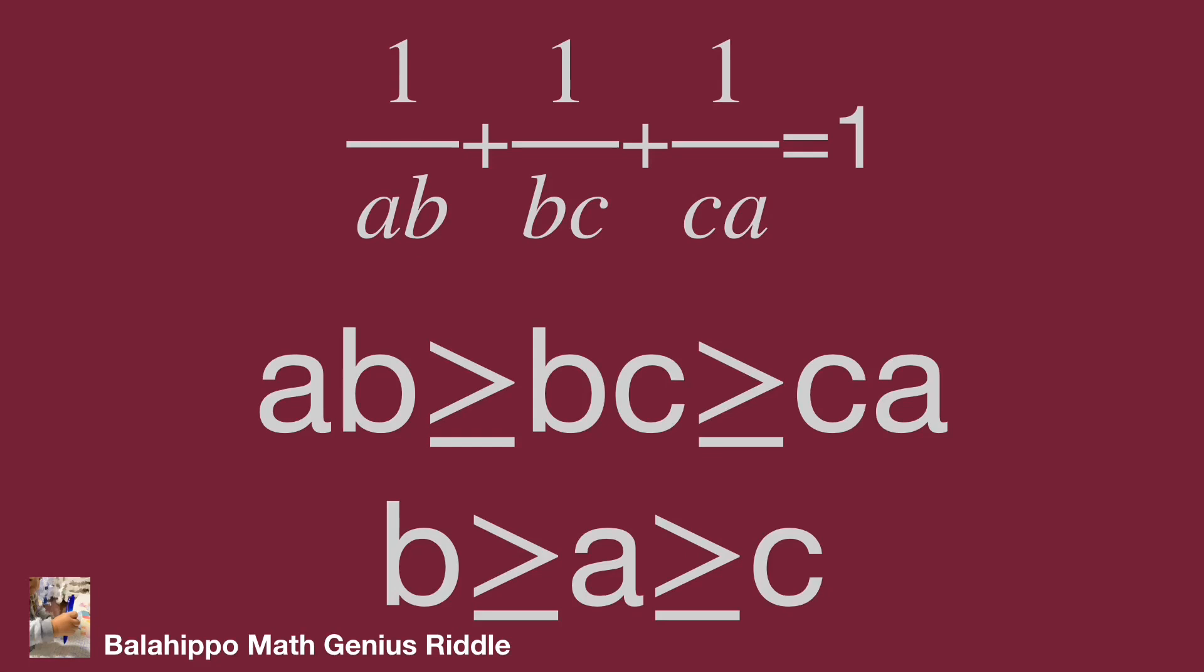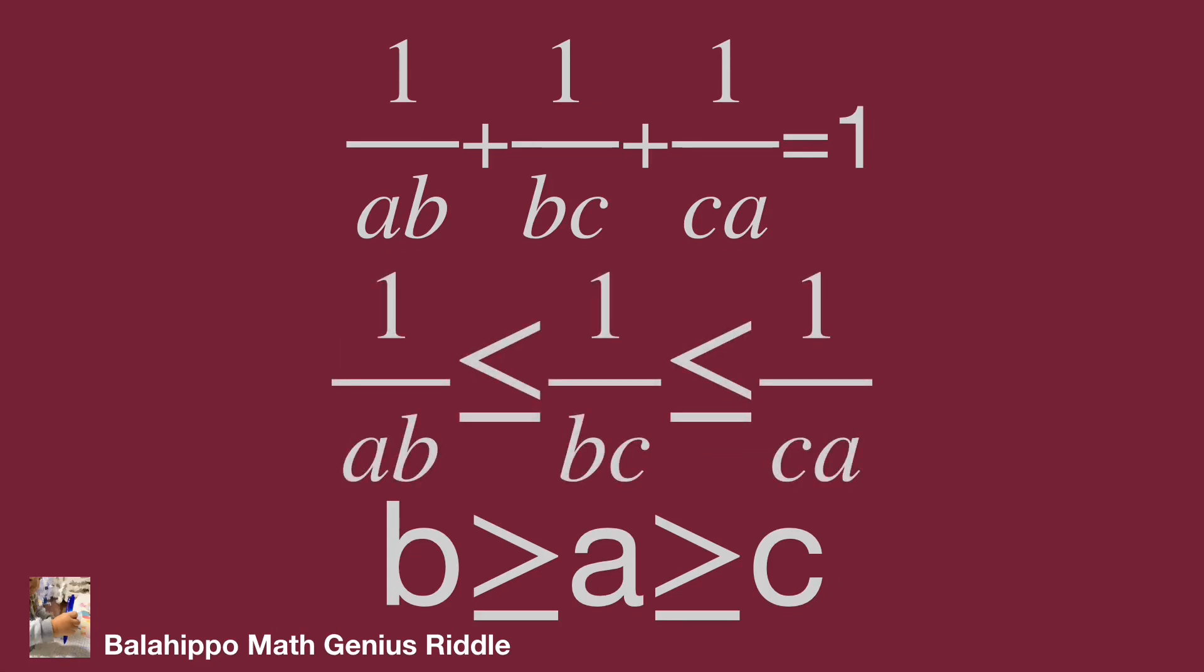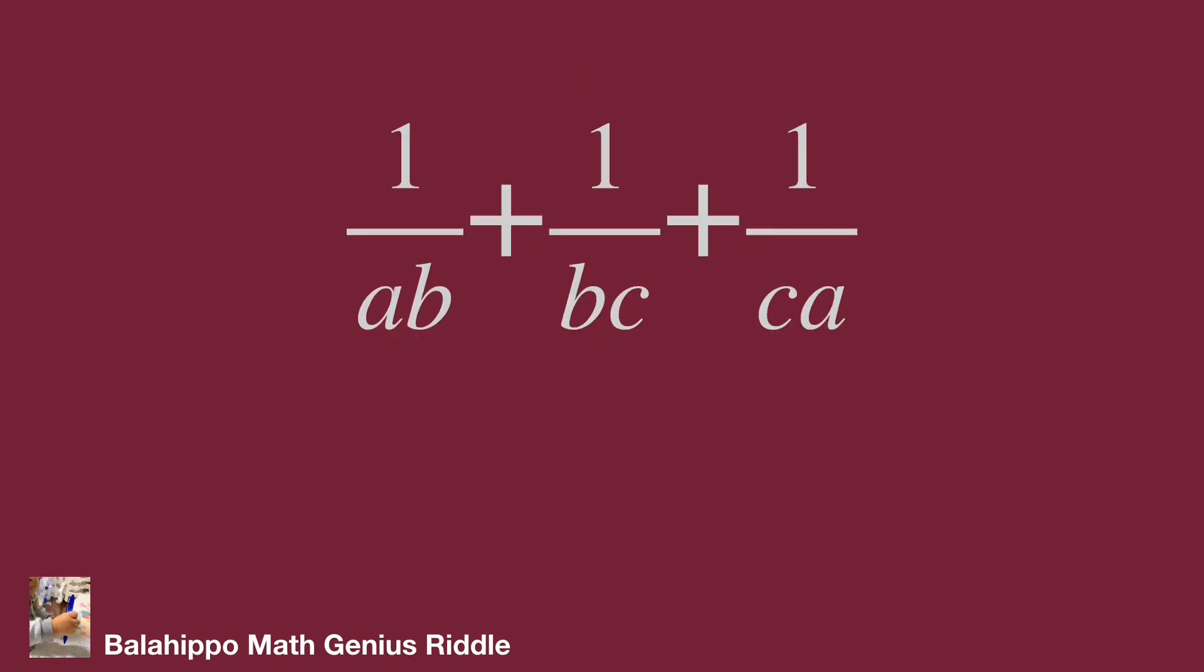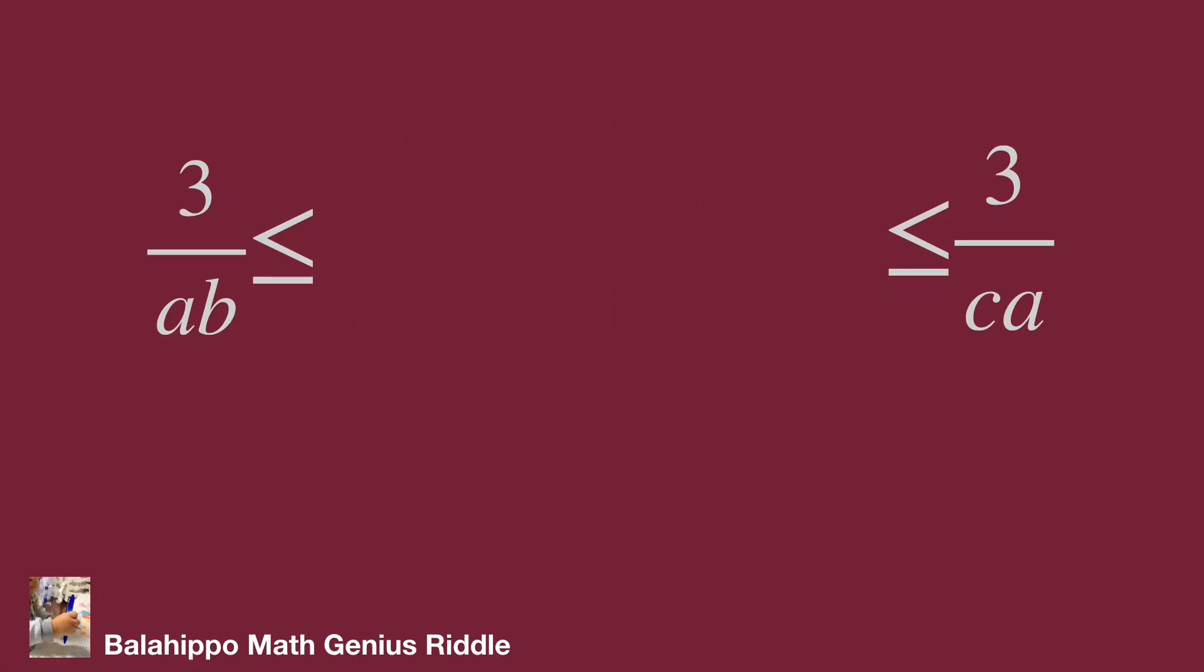And AB larger or equal to BC larger or equal to CA. So the fractions: 1 over AB less or equal to 1 over BC less or equal to 1 over CA. For these new conditions, it leads to 1 over AB plus 1 over BC plus 1 over CA larger or equal to 3 over AB or less or equal to 3 over CA. And 1 over AB plus 1 over BC plus 1 over CA equal to 1.